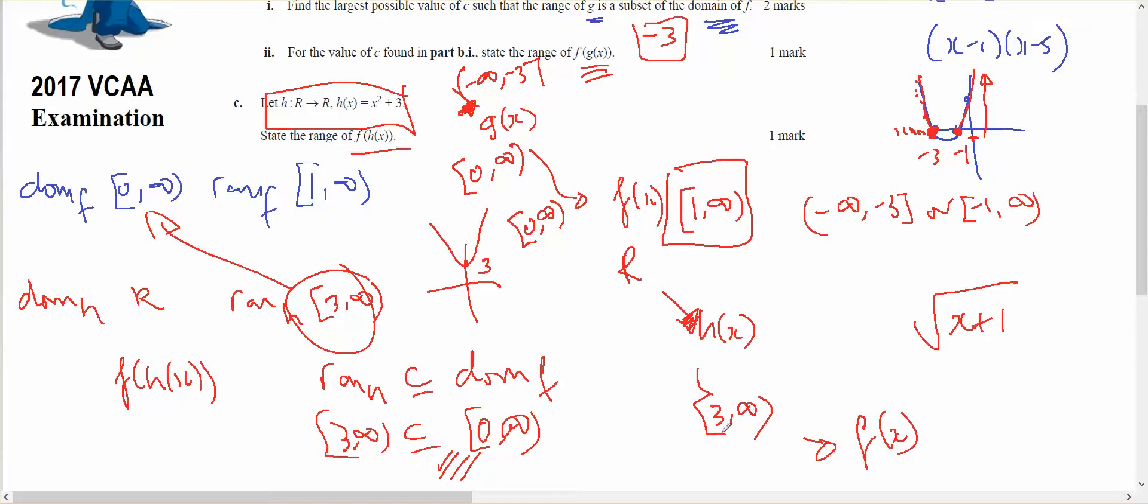So, if the smallest number that I put in is 3, root 4 or 2 should be the smallest number that I get out. And if I put in bigger numbers, the bigger this number is, the bigger I get. So, 2 to infinity should be the range in part C.